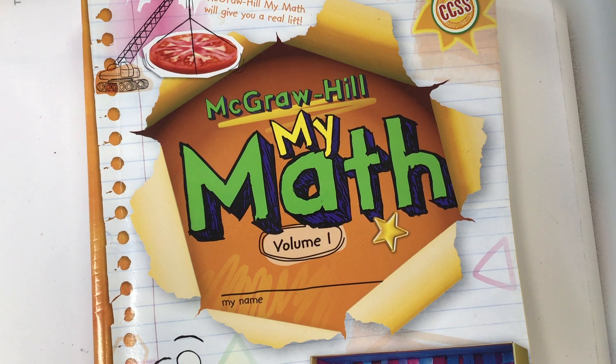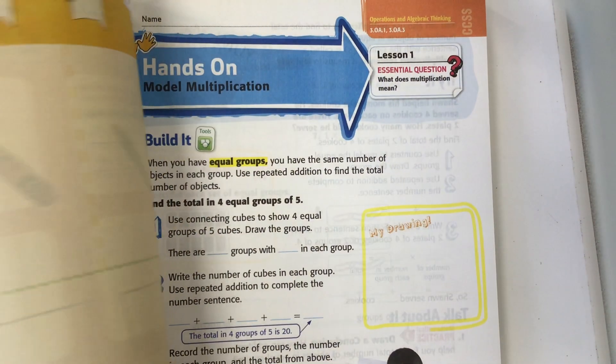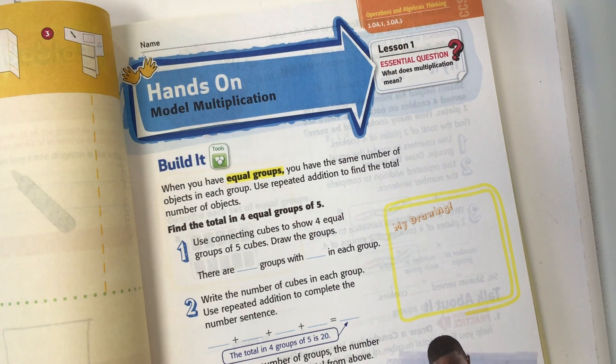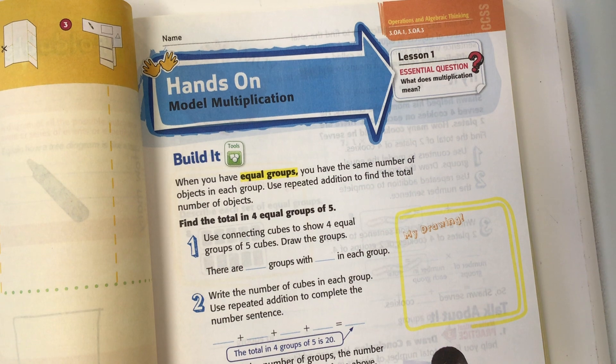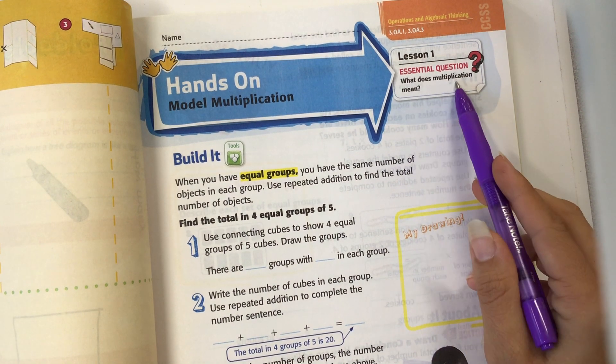We are in the third grade My Math book. We're going to work on pages 193 and 194 today. Hands-on model multiplication, lesson one. Essential question: What does multiplication mean?